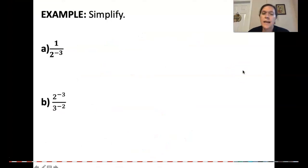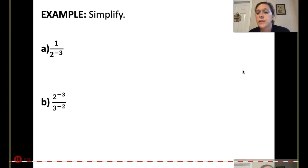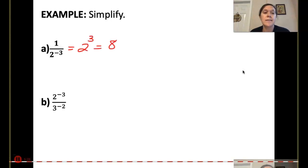Now let's add in some negative exponent work. In part A, I have 1 over 2 to the negative 3rd. To make that become a positive, that would be 2 to the positive 3rd. 2 to the 3rd is 8.